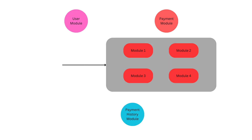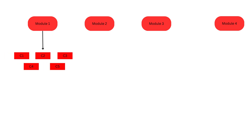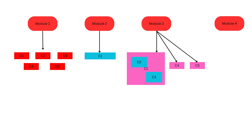Let's say your application is divided into four modules — module one, two, three, and four. Module one can have multiple components that don't depend on each other. Module two can have only one component. Module three can have one component that contains many child components inside it, as well as other standalone components.